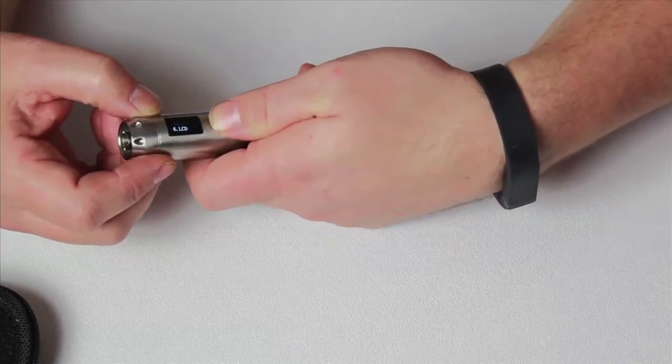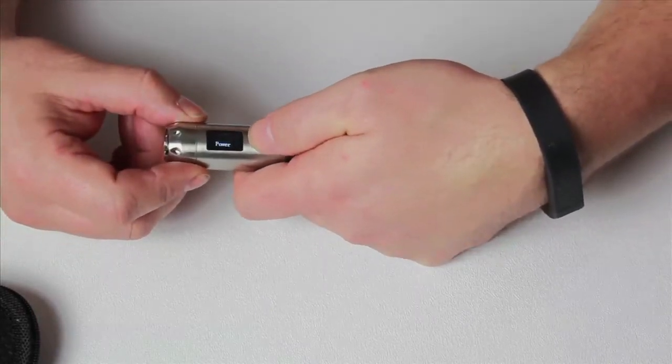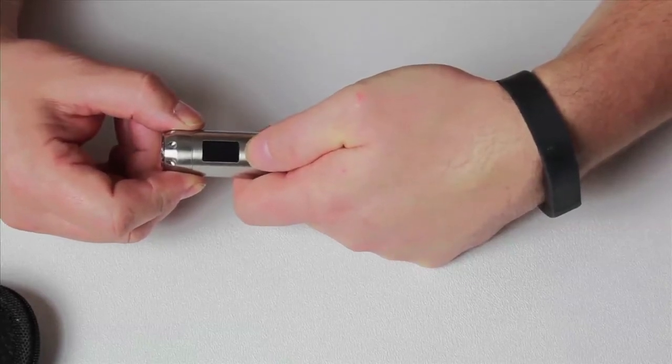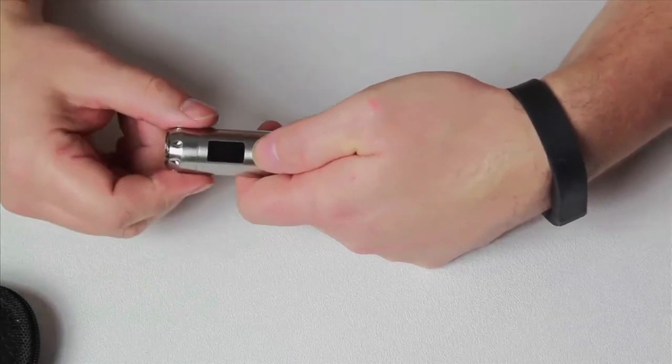Option seven is power or voltage. And this is where you select voltage or wattage. Power is wattage. Voltage is obviously going to run in voltage. I always suggest running in power setting, which is wattage.